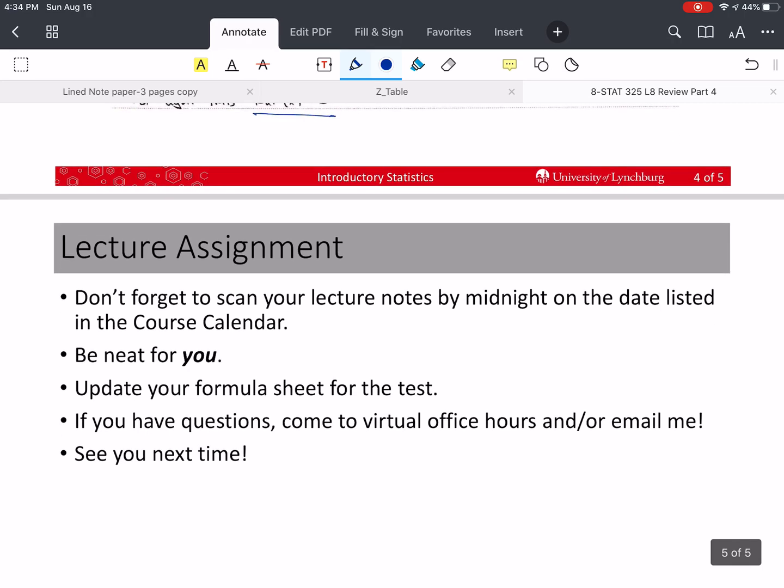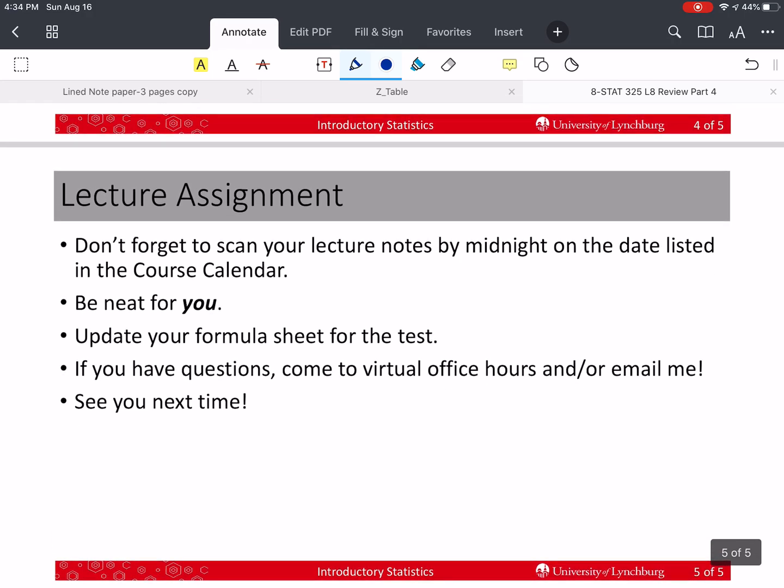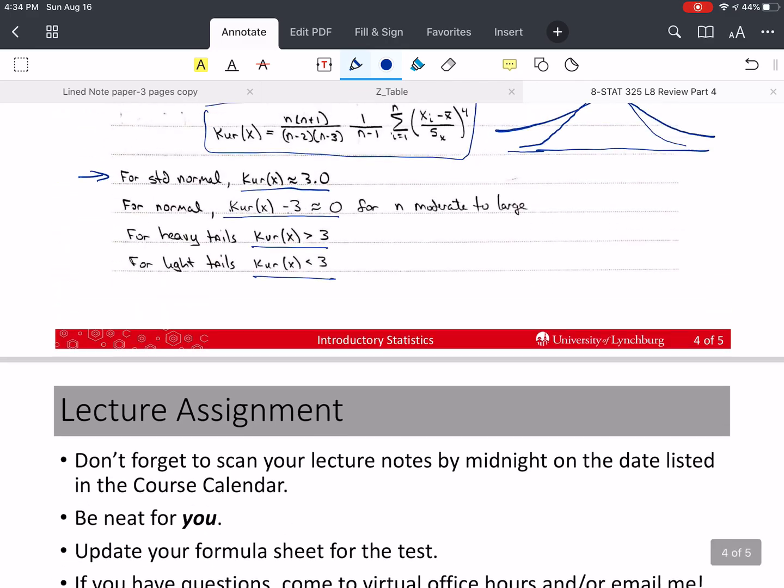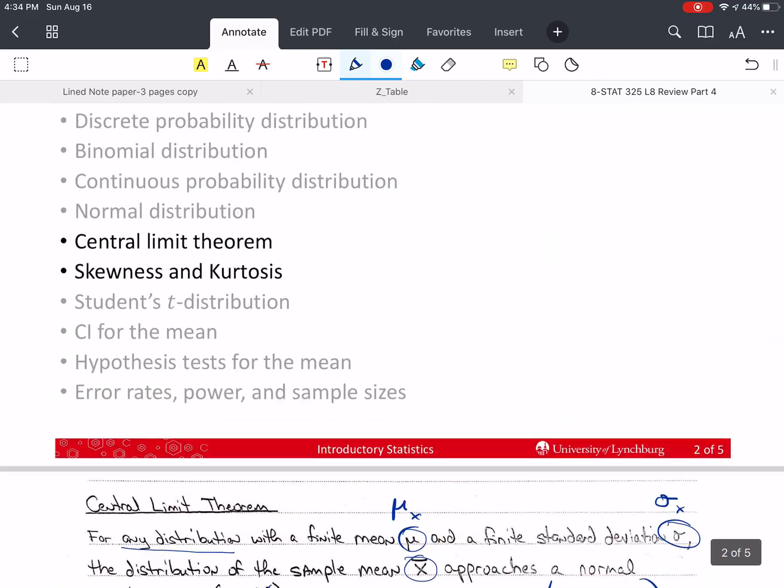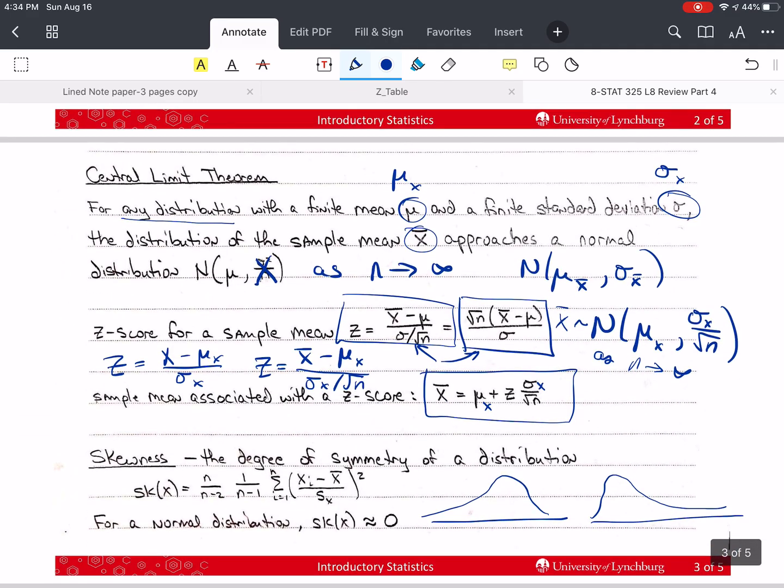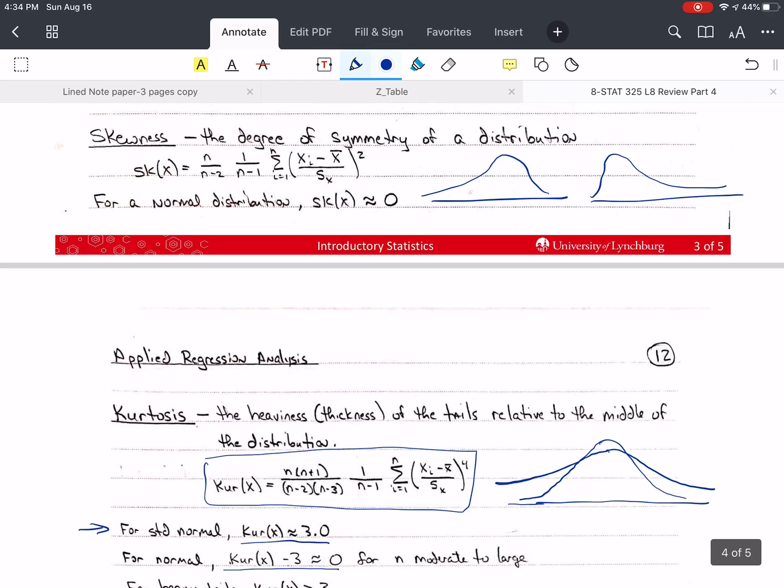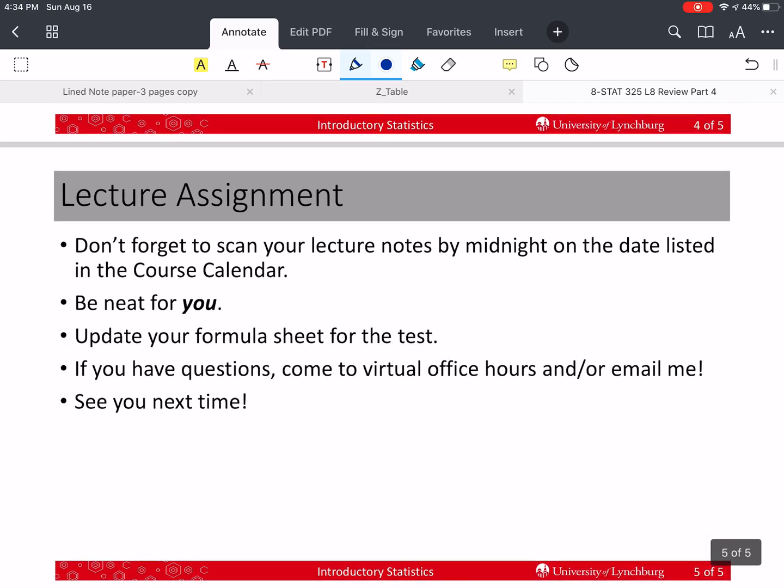That's all I want to talk about in this video. Please don't forget to scan your lecture notes by midnight on the date listed in the course calendar. Be neat for yourself so you can read this in case you need it. You don't really need to update your formula sheet except with the z-scores under the Central Limit Theorem. Make sure your z-scores are in there. If you have questions, you're welcome at virtual office hours, and you can always email me. See you next time.